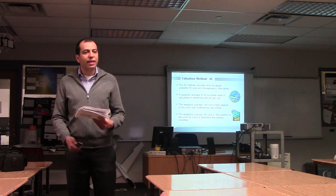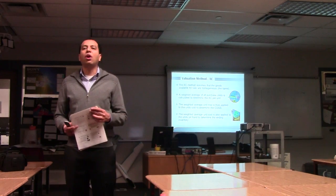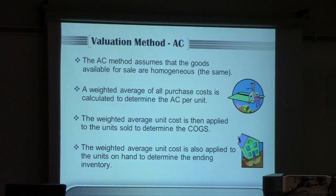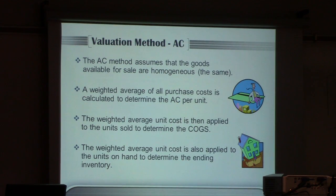The next method is AC — Average Cost. You take the costs of all purchases and calculate a weighted average. For example, if you purchased 100 pens at $1.00 and 2 pens at $2.00, you add $100 plus $4 and divide by 102 pens to get the weighted average cost per unit. Average Cost assumes all goods available for sale cost the same amount, and it is widely used by companies with many products because it is easier to calculate.